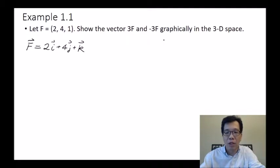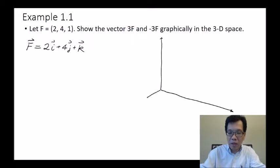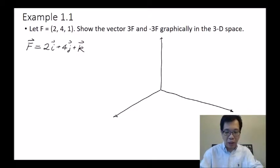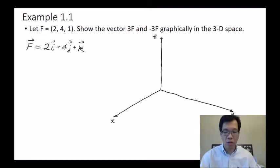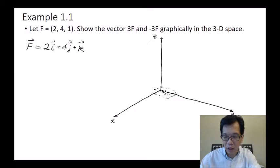When we try to represent everything in three-dimensional space graphically, we draw a three-dimensional coordinate system with axes labeled x, y, and z. We draw two units along the x direction, four along the y direction, and one along the z direction. The resulting vector in 3D space looks like a diagonal line — this is my f vector.